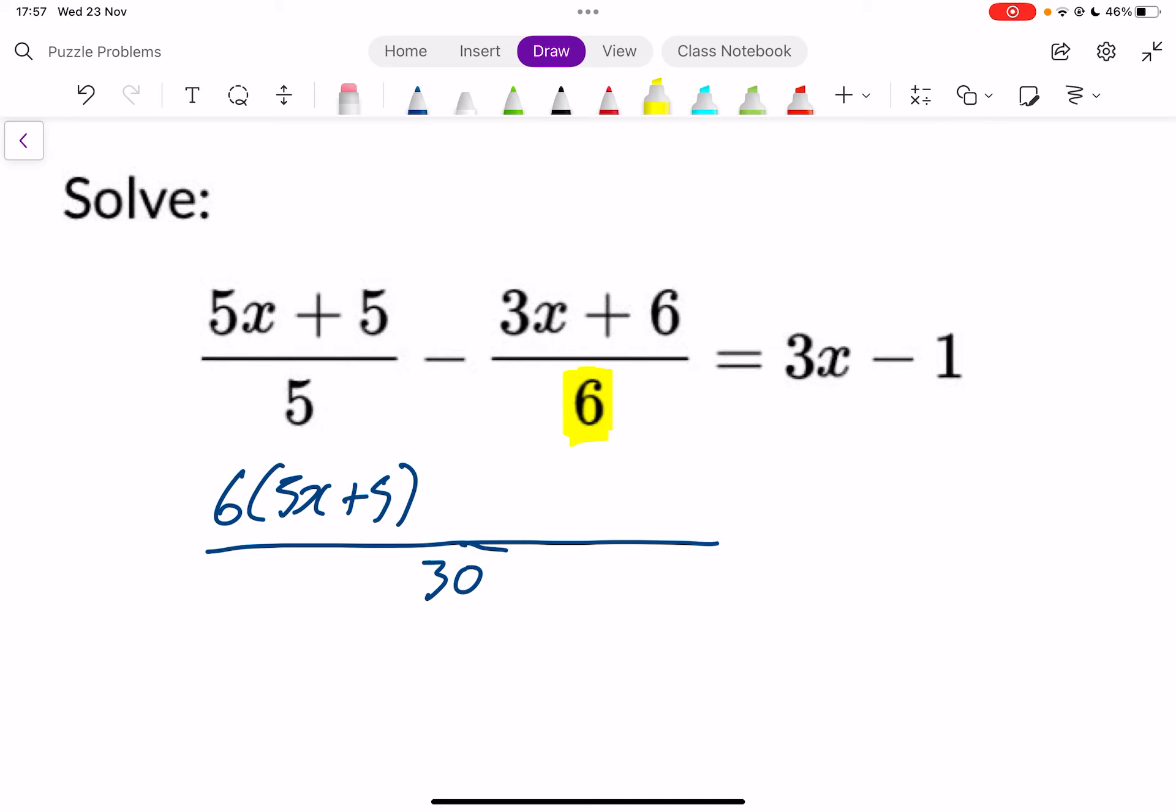And this 6 could multiply by 5 to become 30, so the top line also gets multiplied by 5. So that becomes minus 5 times (3x plus 6), and that equals 3x minus 1.